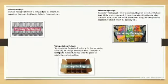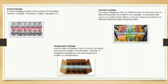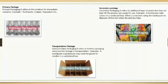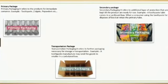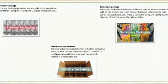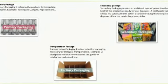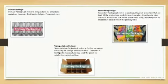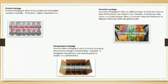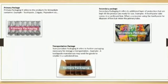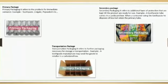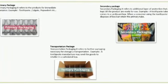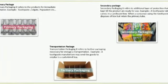Secondary packaging refers to an additional layer of protection that is kept until the product is ready for use. For example, a toothpaste tube comes in a cardboard box. The third is transportation packaging, which refers to further packaging necessary for storage or transportation.